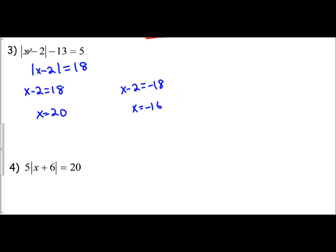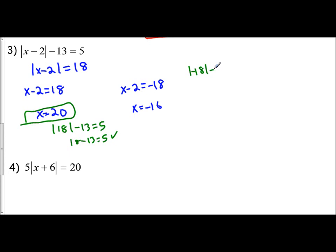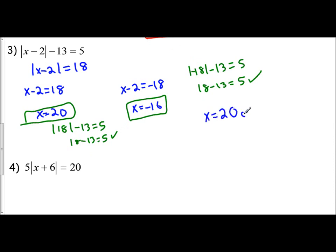Plugging in x equals 20: 20 minus 2 is 18, so we have the absolute value of 18 minus 13. Does that equal 5? Yes, 18 minus 13 equals 5. That's a solution. Now plug in x equals negative 16: negative 16 minus 2 is negative 18. The absolute value of negative 18 is positive 18, and does 18 minus 13 equal 5? Yes it does. So x equals negative 16 is also a solution. Our final answers are x equals 20 or x equals negative 16.